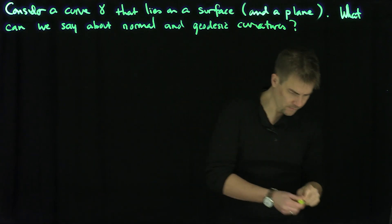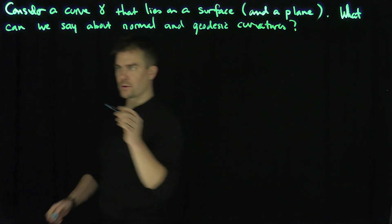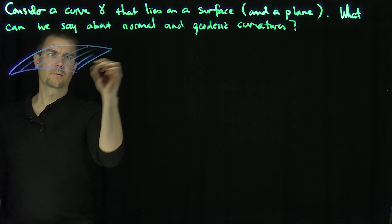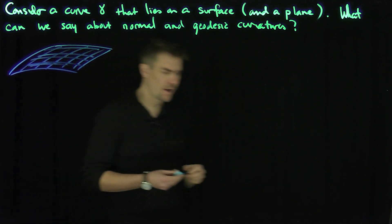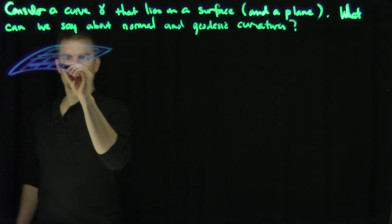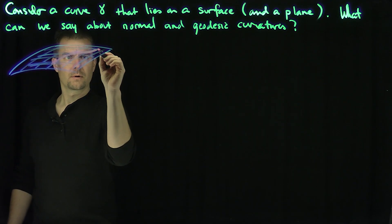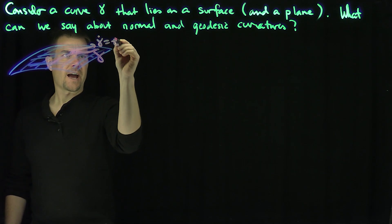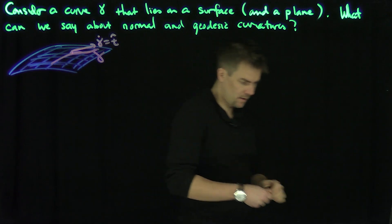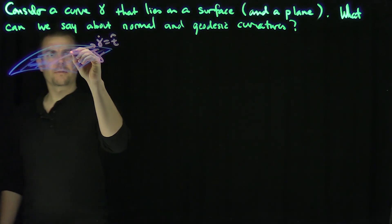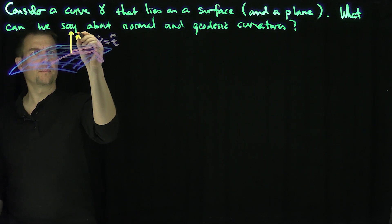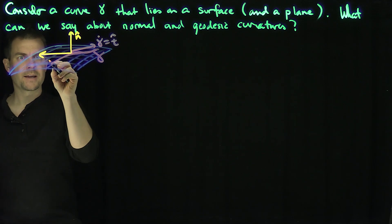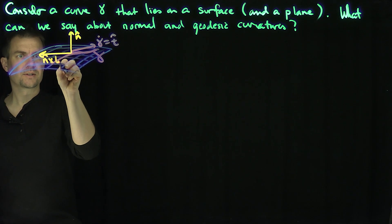Our configuration is that we have a surface, and then we always have some curve on the surface — there's my gamma. And then at a particular point, there's my gamma dot, which is t-hat. There's always going to be a normal vector to the surface — that's my n-hat, my unit normal. And then we do this configuration where we cross these two things to get a mutually perpendicular system, so that's going to be my n-hat cross t-hat.